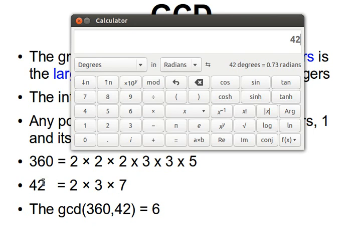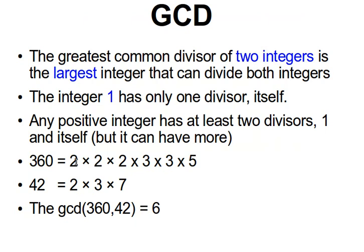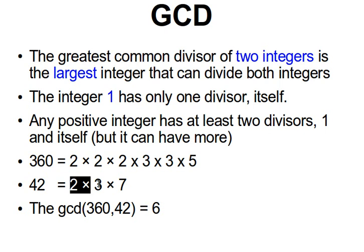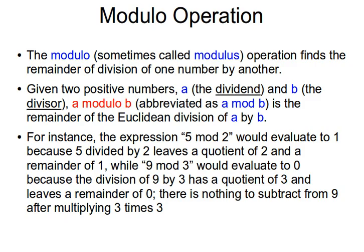Now if I want to compute the GCD of 360 and 42, I factorize them — assuming you are familiar with factorization — and then find the overlap. The overlap between 360 and 42: 2 appears once and 3 appears once. That means the GCD is the product of the overlapping factors, which in our case is 2 × 3 = 6. So the GCD of 360 and 42 is 6.